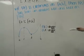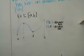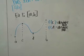Basically, this tells us that if a function is continuous, it will have an absolute minimum and maximum.